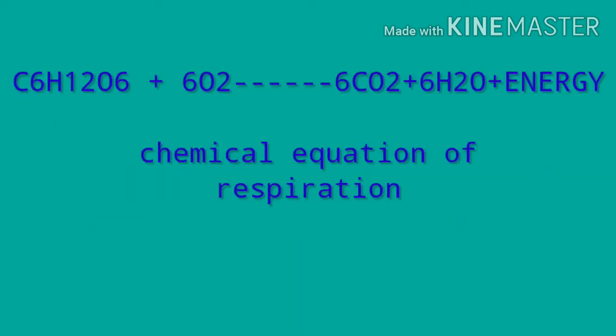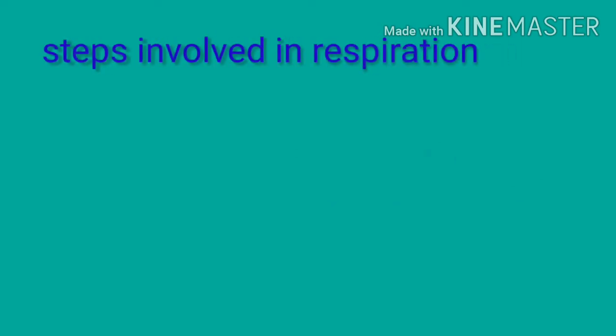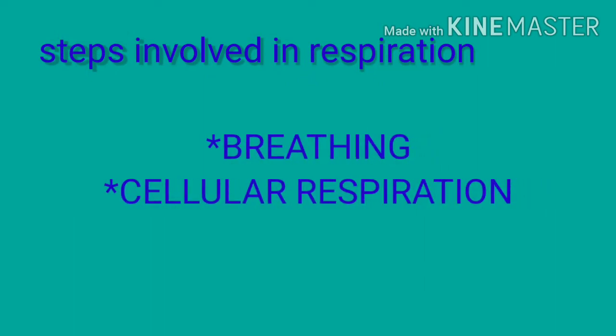On your screen you can see the chemical equation of respiration: C6H12O6 (glucose) + 6O2 (oxygen) → 6CO2 (carbon dioxide) + H2O (water) + energy. This is the chemical equation of respiration. Now we need to see what are the steps involved in respiration.